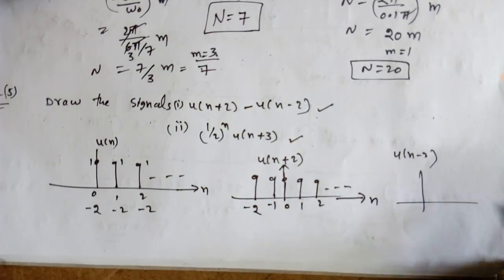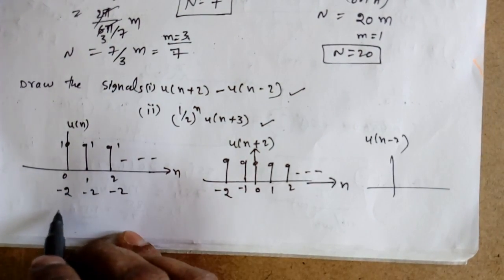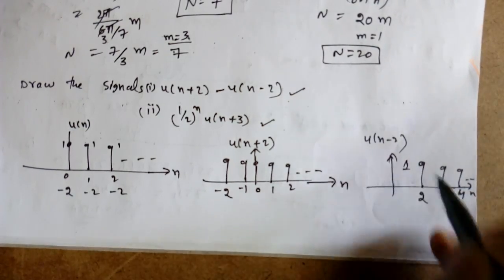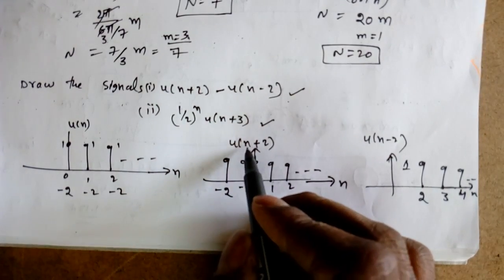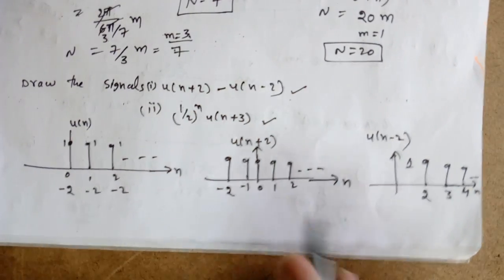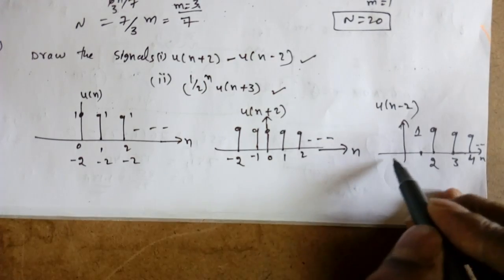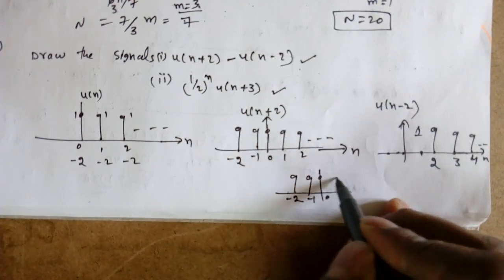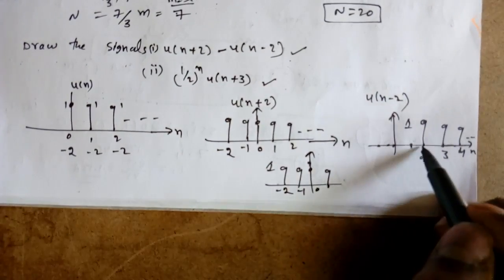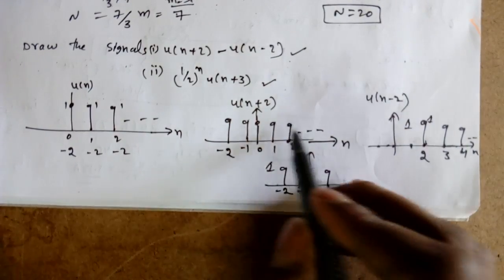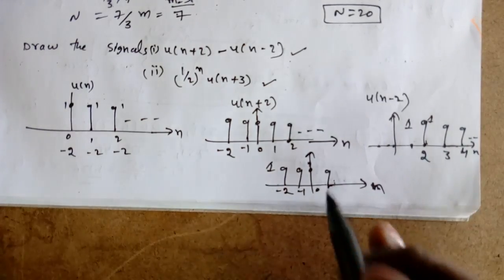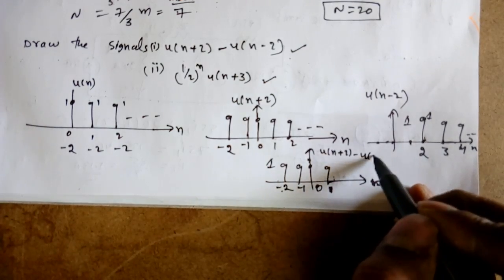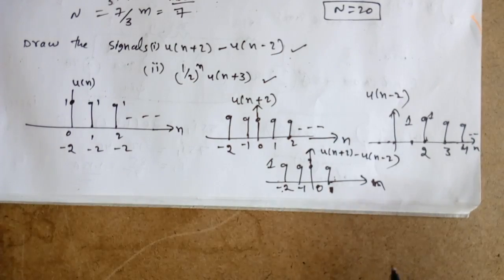Now we subtract u[n-2] from u[n+2]. From n = -2 to 1, u[n-2] has no value, so the result is same as u[n+2]. From n = 2 onwards, both signals have value 1, so 1 minus 1 equals 0. Therefore, u[n+2] - u[n-2] is non-zero only from n = -2 to n = 1. This is the final diagram.